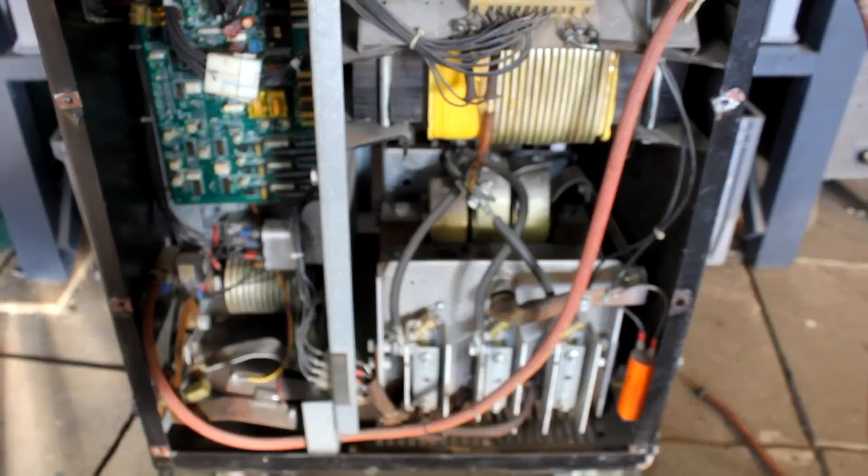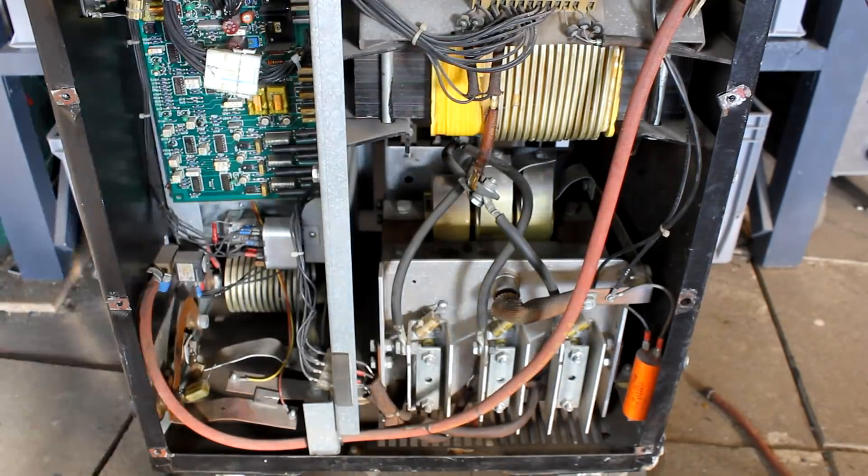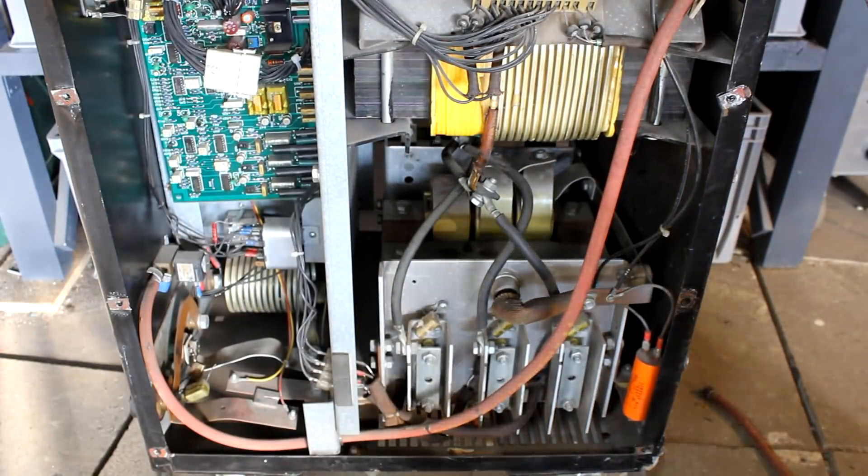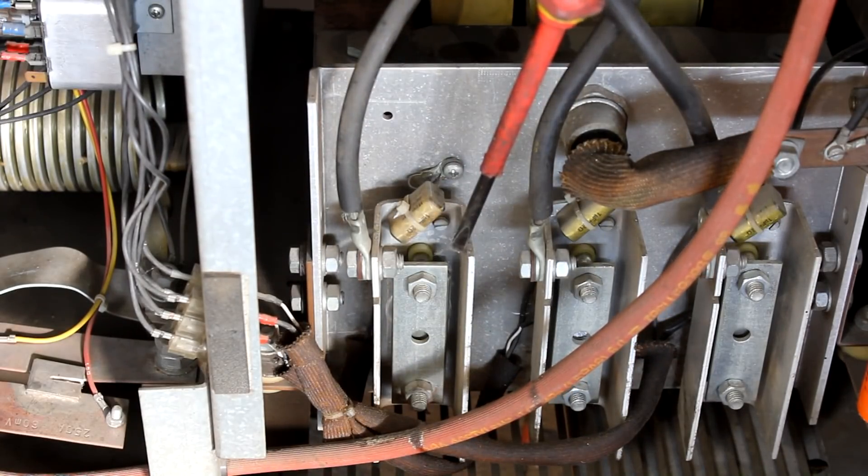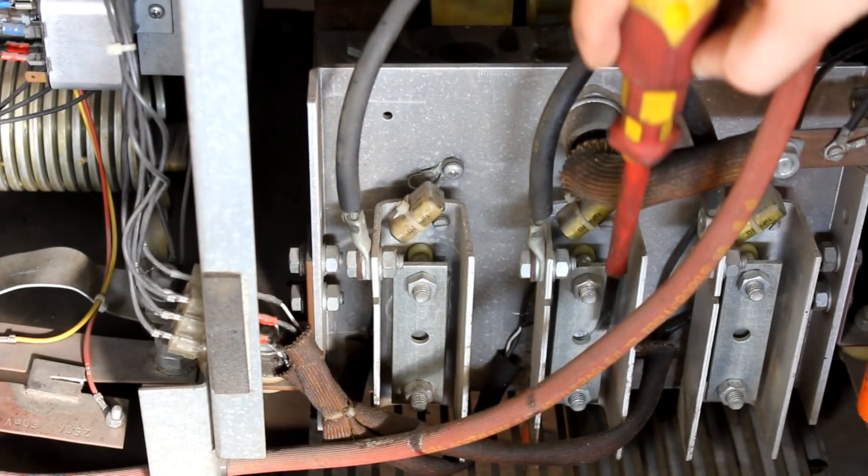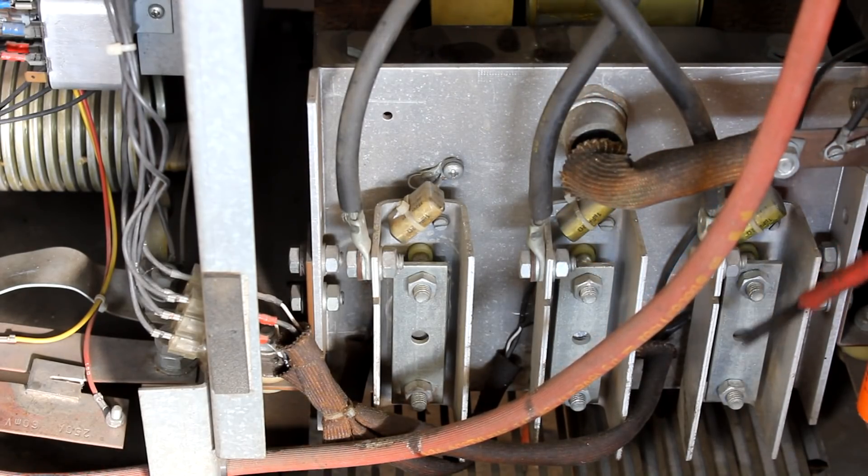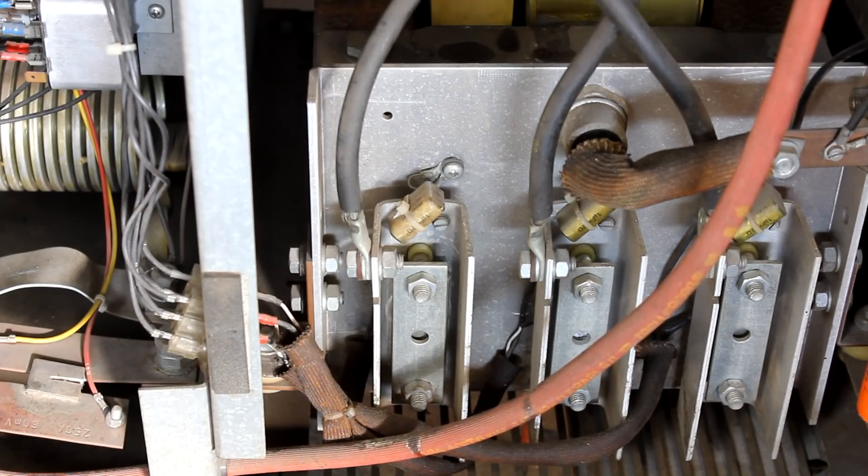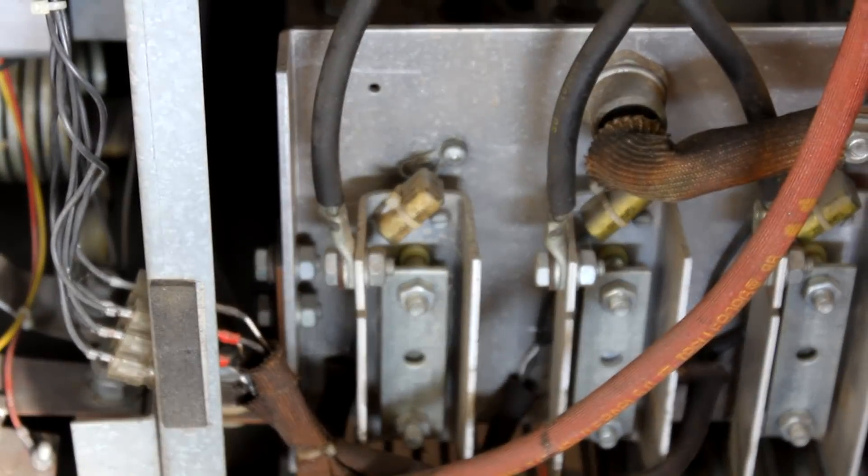So I've now turned the machine around by 180 degrees. And we're taking a look inside the other side of the machine. And we find, again, a large heatsink. But this time, other components are installed here. And behind these smaller heatsinks here that are sitting on the large heatsink are SCRs or thyristors.